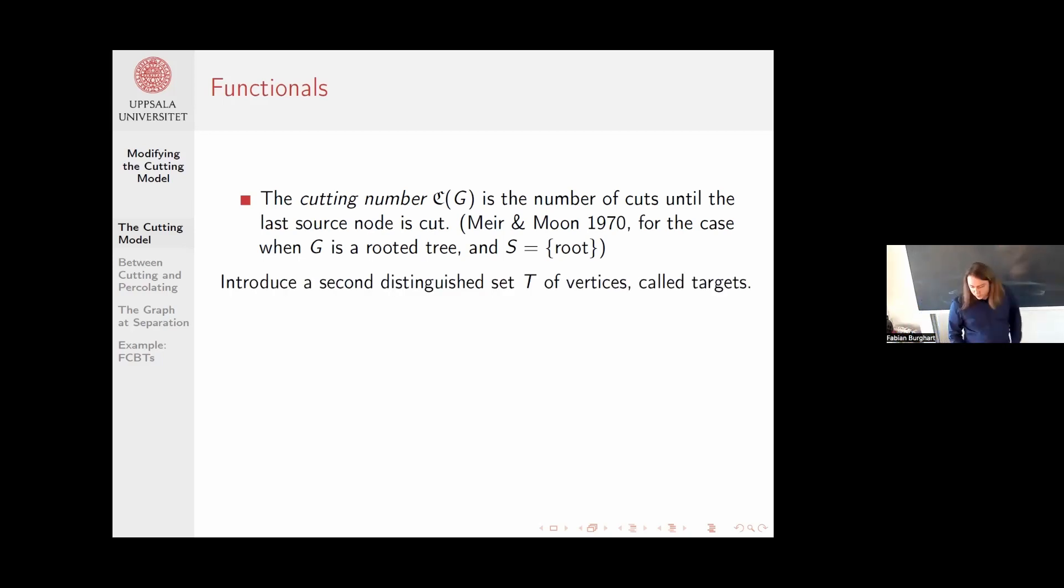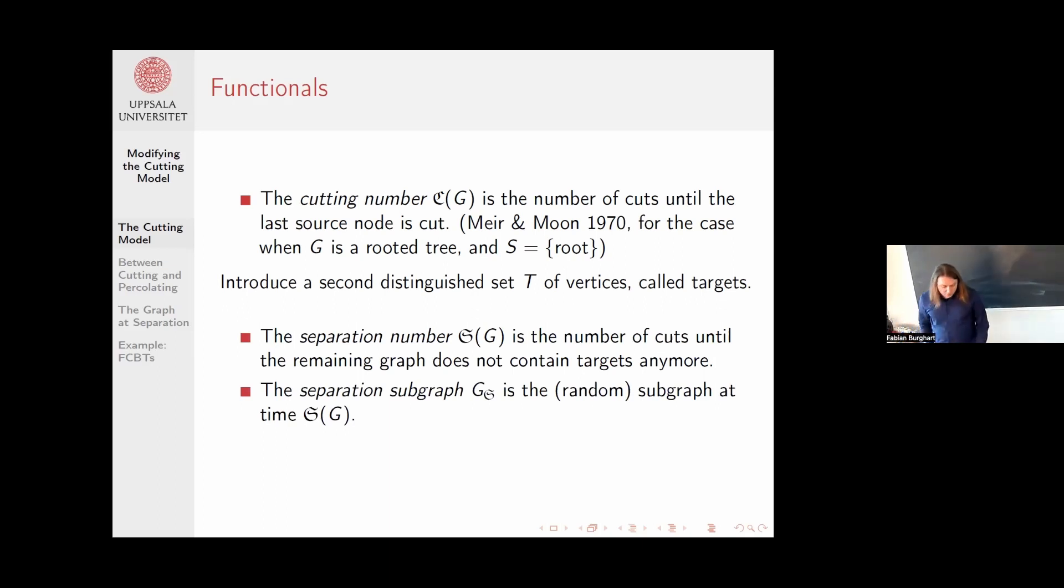Here comes the modification, which is to introduce a second set of vertices called targets. This allows me to look at the first time when none of the targets are in the remaining graph. We call this separation number. Also, because by that time the remaining graph might not be empty, it makes sense to ask how does this bit that remains look?